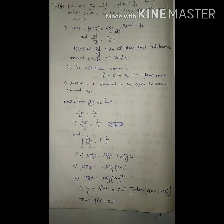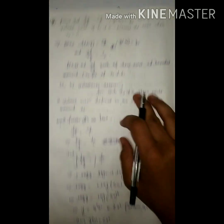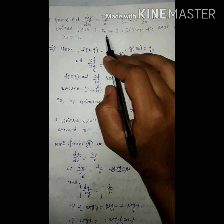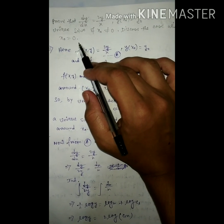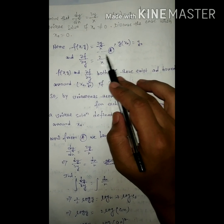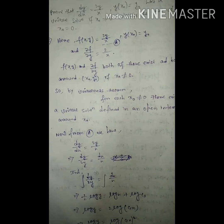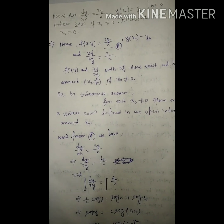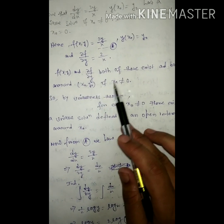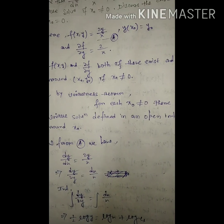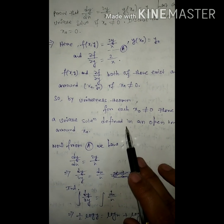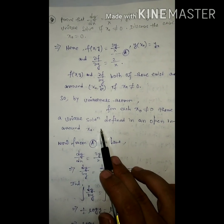This completes the proof. Next problem: prove that dy/dx = 2y/x with y(x₀) = y₀ has a unique solution if x₀ ≠ 0, and discuss the case when x₀ = 0. Here f(x,y) = 2y/x, and ∂f/∂y = 2/x. Both f(x,y) and ∂f/∂y exist and are bounded around (x₀, y₀), and it is noted that x₀ ≠ 0. So by the uniqueness theorem, for each x₀ ≠ 0 there exists a unique solution defined in an open interval around x₀.